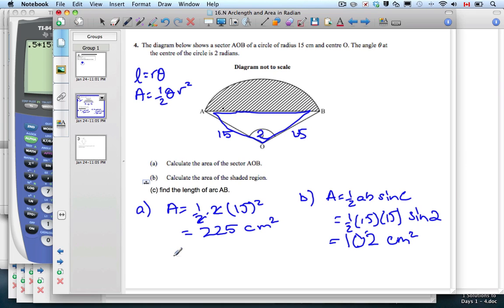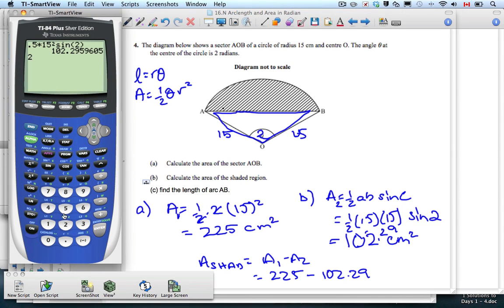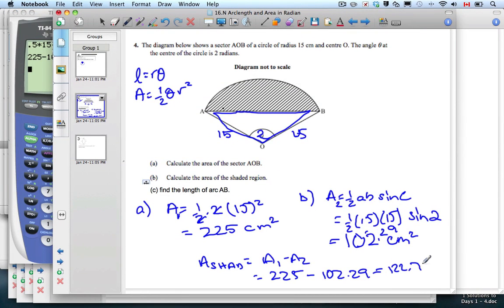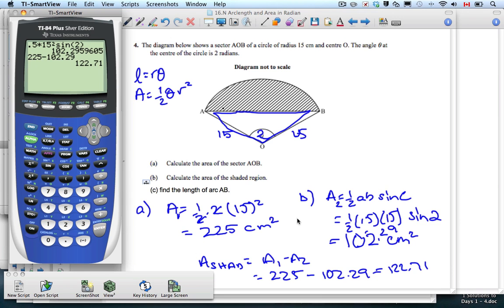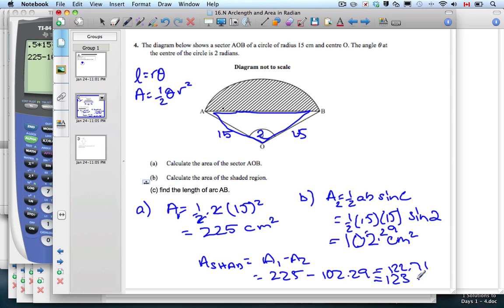We want to find the shaded region. Let's keep our decimals because it might make a difference. The shaded equals A1 minus A2, which will be 225 minus 102.29. I get 122.71. When I round this to three significant figures, it is 123 centimeters squared.